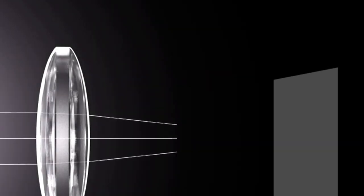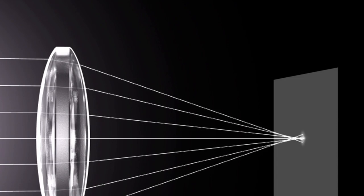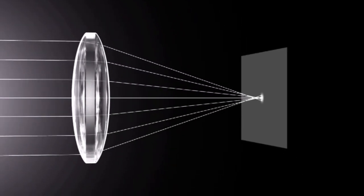The position of the focal point for the light that passes through the center of the lens and the light that passes through surrounding areas does not line up. This misalignment causes the image to become blurred.